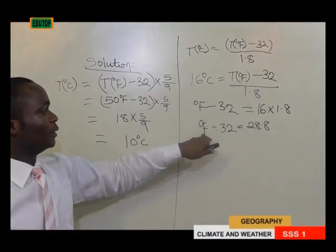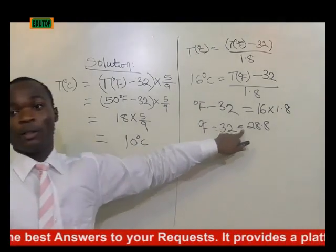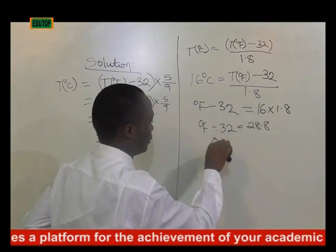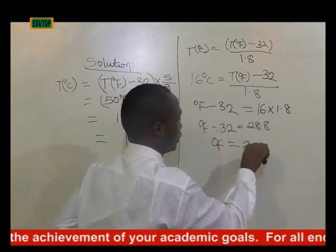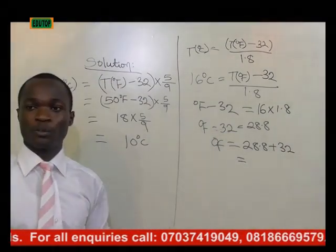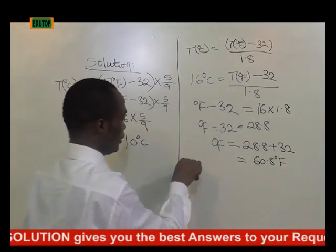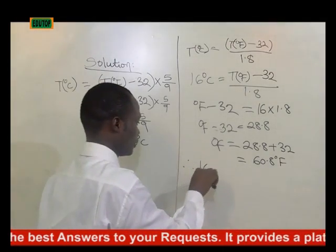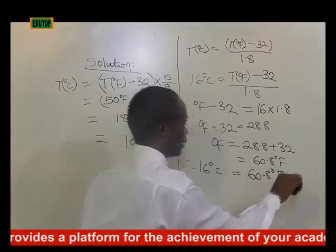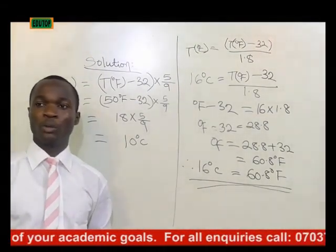To make degrees Fahrenheit the subject of the formula, minus 32 crosses to the other side and becomes plus 32. Therefore, degrees Fahrenheit equals 28.8 plus 32, which equals 60.8 degrees Fahrenheit. Therefore, 16 degrees Celsius equals 60.8 degrees Fahrenheit. We have succeeded in converting from degrees Celsius to Fahrenheit.